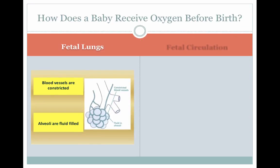How does the baby receive oxygen before birth? When the baby is still in utero, all oxygen the fetus uses crosses the placental membrane from the mother's blood to the baby's blood. Only a very small amount of fetal blood passes through the fetal lungs. The fetal lungs are expanded in utero, but the alveoli are filled with fluid rather than air. The arterioles perfusing the lungs are constricted, in part due to the low PO2 in the fetus.